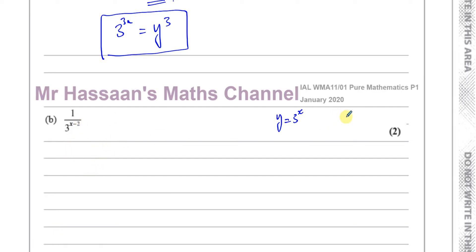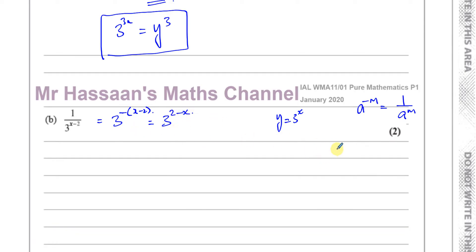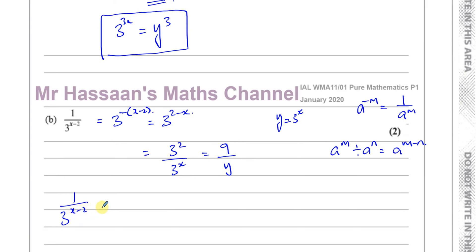I'm going to use the law about the reciprocal: a to the power of negative m is the same as 1 over a to the power of m. So I can rewrite this as 3 to the power of negative x minus 2, which equals 3 to the power of 2 minus x. Then using the division law — when you divide two numbers with the same base, you subtract their powers — I can break this up into 3 to the power of 2 divided by 3 to the power of x, which is 9 over y, since 3 to the power of x is y. So the answer is 9 over y, or equivalently 9y to the power of negative 1.